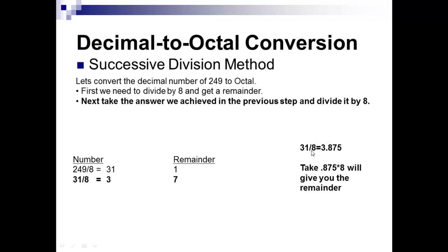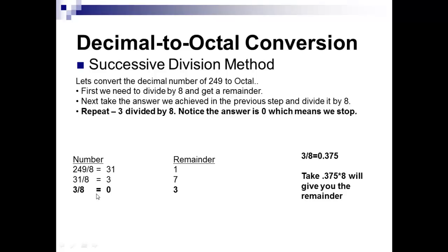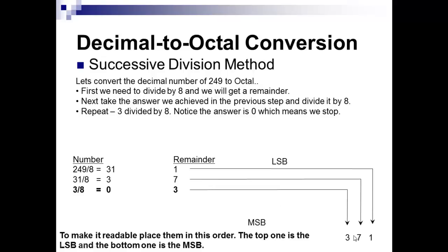Next, thirty-one divided by eight equals 3.875. The whole number part is three, and the remainder is 0.875 times eight, which equals seven. Then three divided by eight equals zero — we stop when the result is zero. The remainder is 0.375 times eight, which is three. Just like binary, the last remainder is the most significant digit, so reading from bottom to top the answer is 371 in octal.